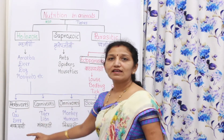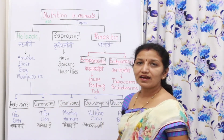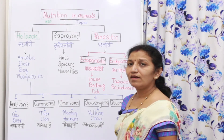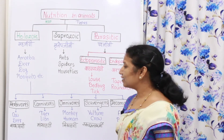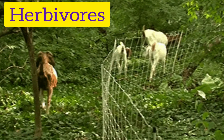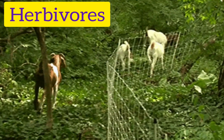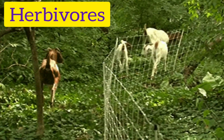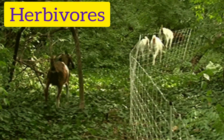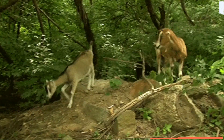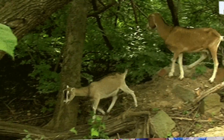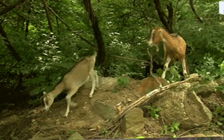Herbivorous means shakahari prani. They nourish themselves by eating plants and plant materials. 'Herb' means plant, and that's why herbivorous animals are shakahari. Examples are cow, deer, and rabbit.